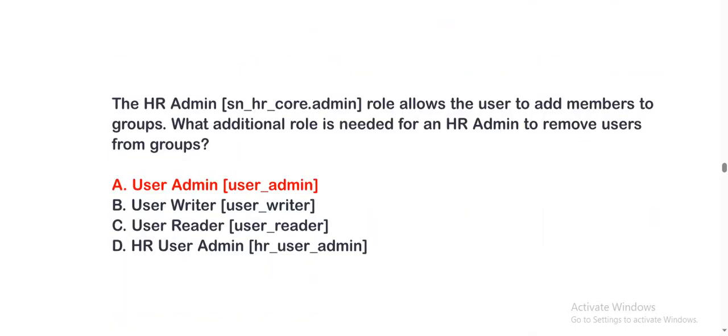The HR admin role allows the user to add members to groups. What additional role is needed for an HR admin to remove users from groups? Option A: user admin. Option B: user writer. Option C: user reader. Option D: HR user admin. The correct option is A.